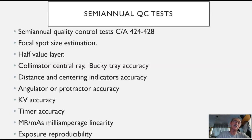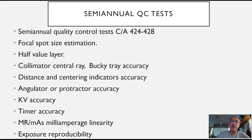So if we're selecting 50 KV at 10 milliseconds, for instance, we have proof positive based on these meters that that is in fact what we selected and what the output was. Milliampere linearity — linearity is similar to reciprocity. One second at 10 MA would be a 10 MAS exposure, but half a second at 20 MA would also be a 10 MAS exposure. We want to be sure that our milliampere stations are set up so there is no discrepancy between them — that they're accurate and predictable.